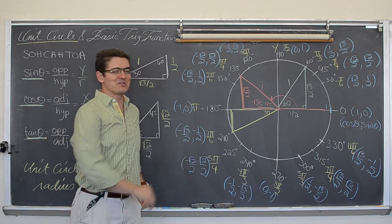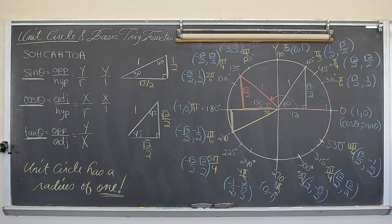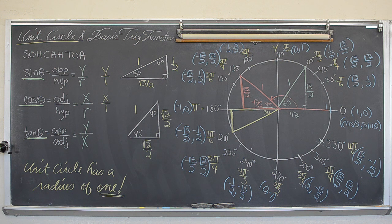I am Mr. Tarrou — that is the unit circle. BAM! You will notice that 45, 135, 225, and 315 all have matching coordinates except for sign changes, because they all share a 45 degree reference angle. And 60, 120, 240, and 300 also have matching reference angles of 60 degrees, and therefore the same coordinates only with sign changes. Thank you very much for listening — let me help. I am Mr. Tarrou, go do your homework.